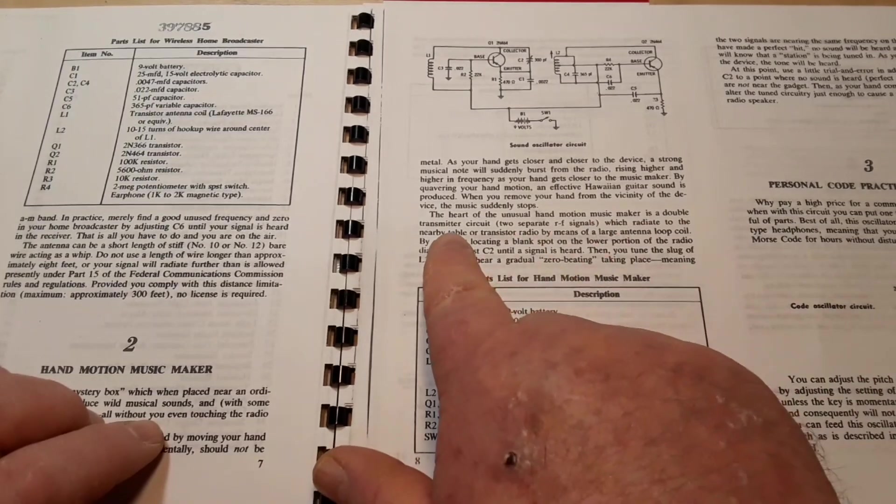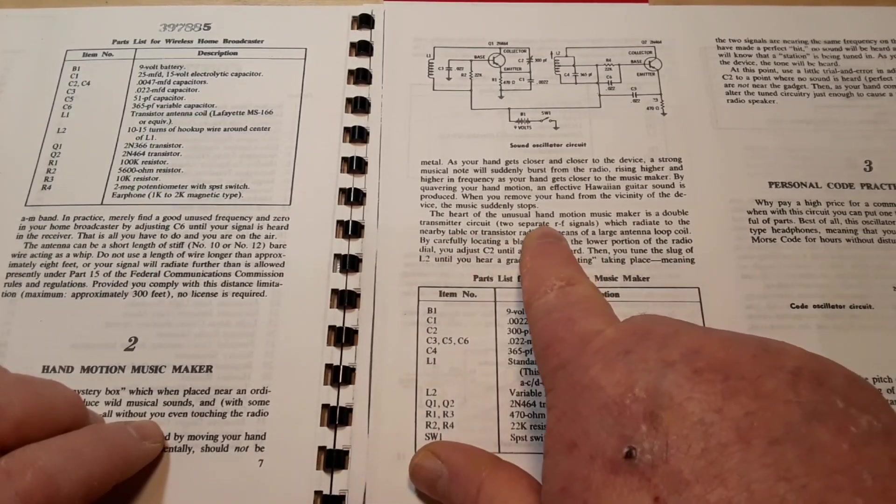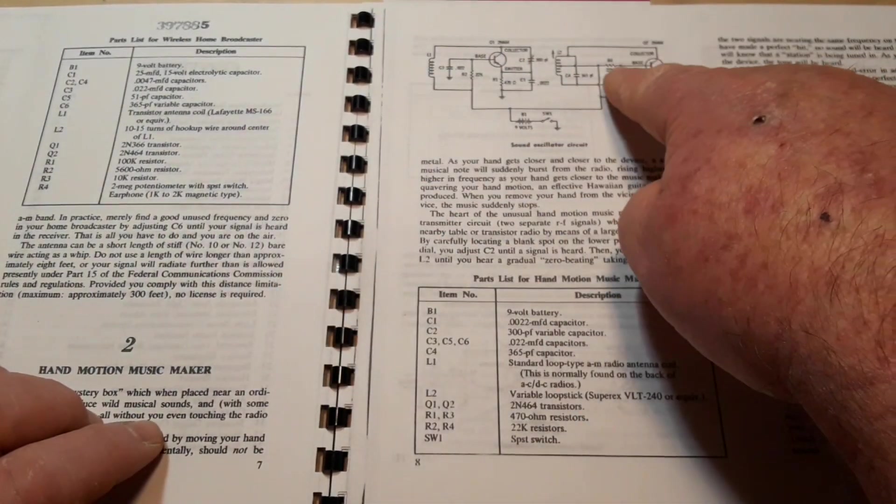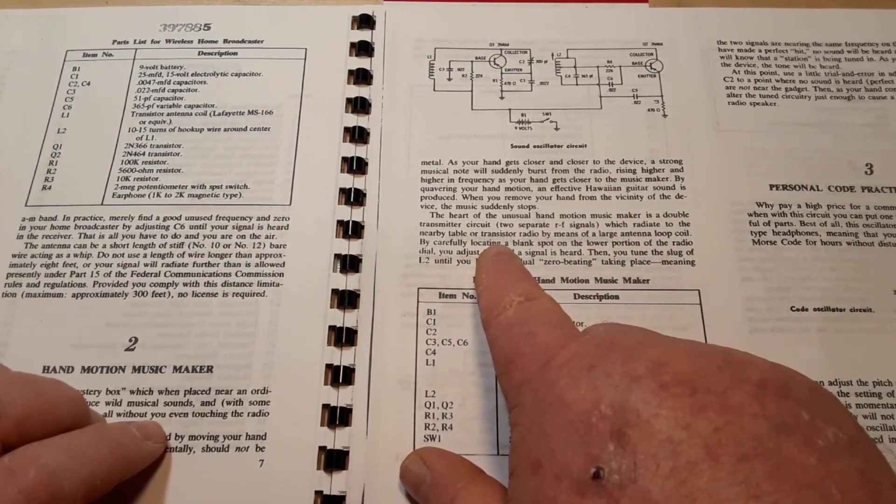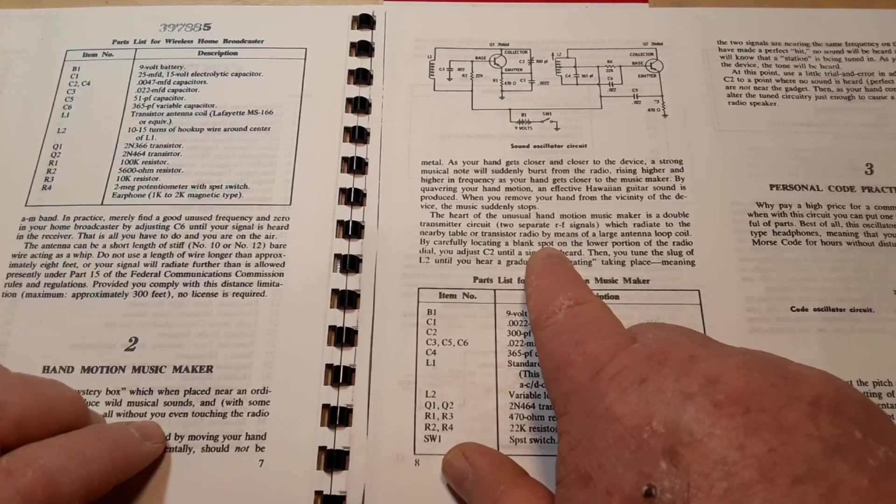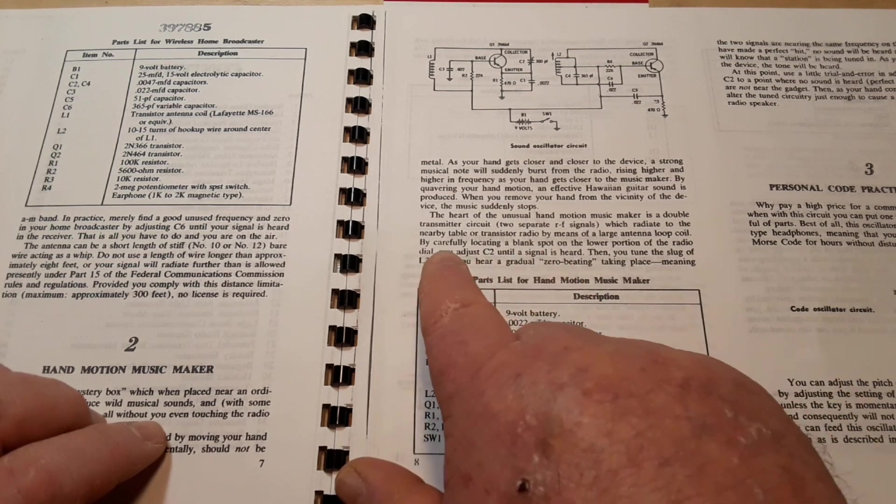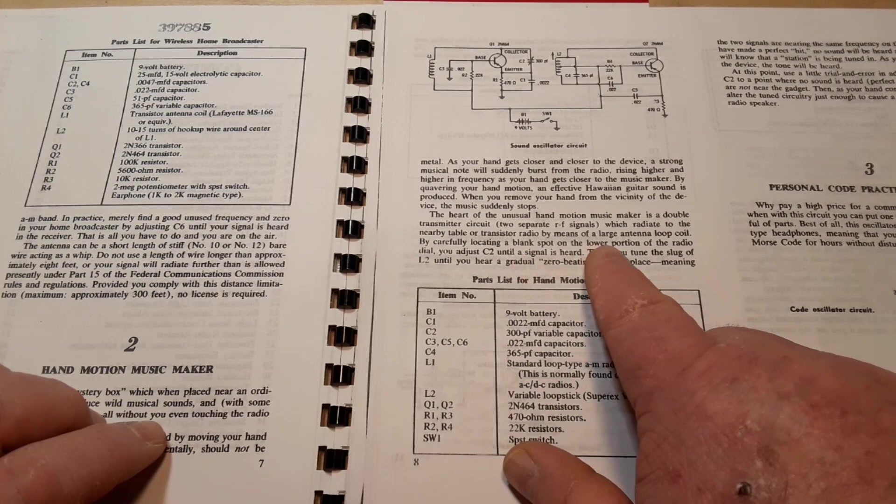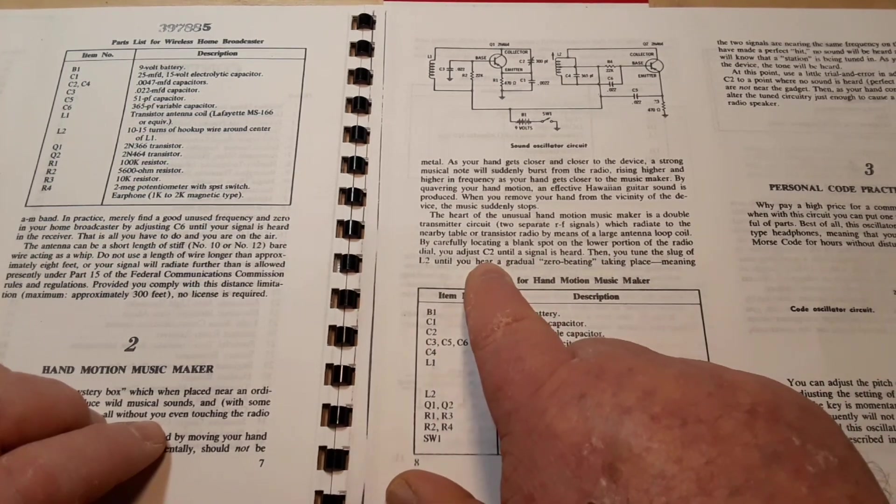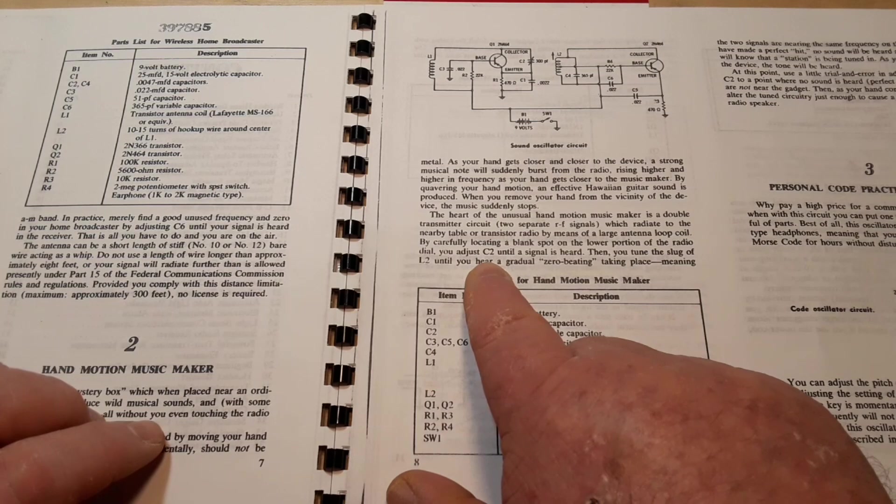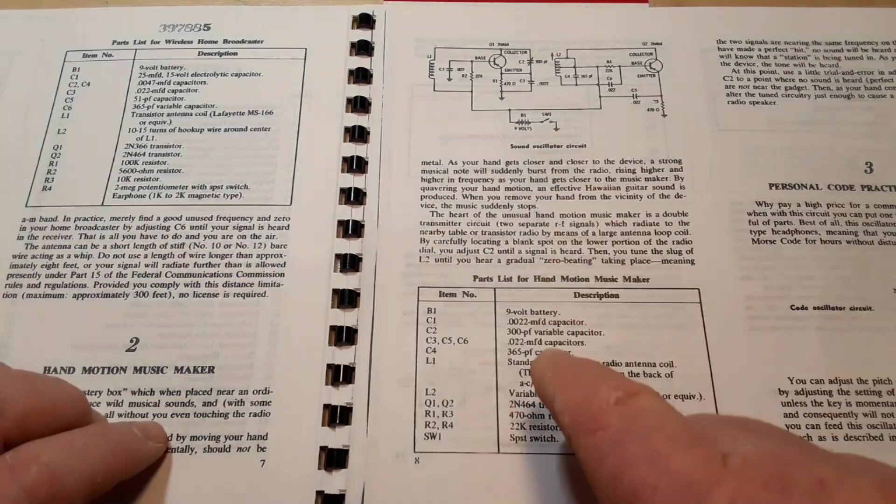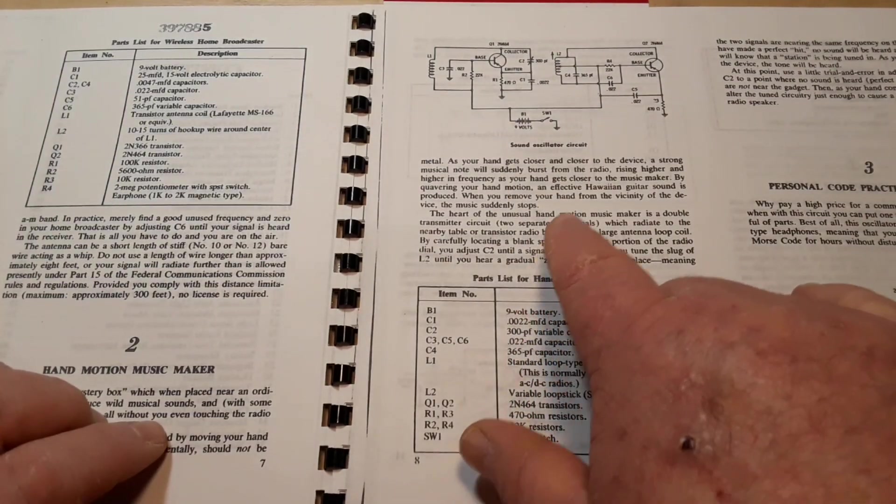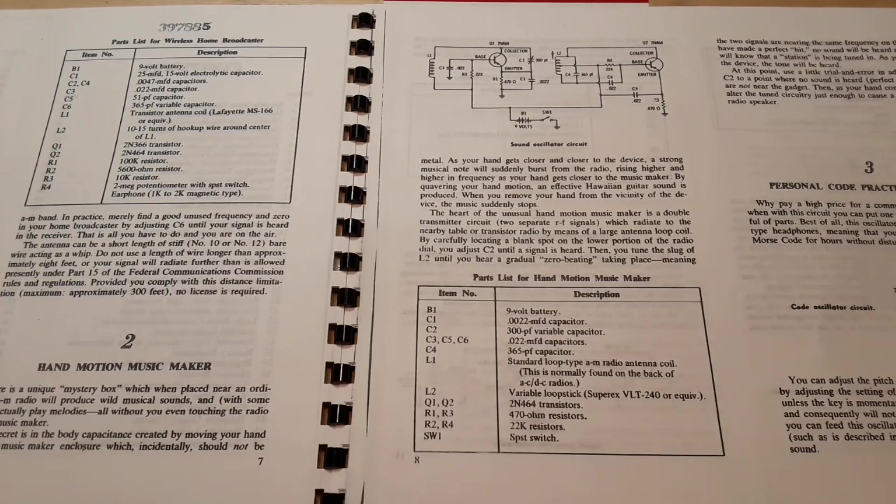It's using a couple of PNP transistors. That's obviously to tune the tank circuit for the broadcast. 9-volt battery, power switch. So it even tells you about the circuit. The heart of the unusual hand motion music maker is a double transmitter circuit with two separate RF signals.